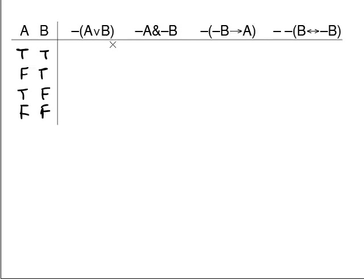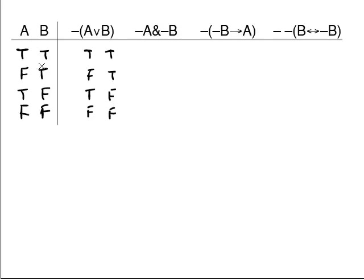Now let's work on dash-A wedge B. To be really thorough, start by repeating the guide column underneath the sentence letters. Under A, write true, false, true, false. Underneath B, write true, true, false, false. This is a step you may want to skip after you get more comfortable, but to begin with, just rewrite the guide columns underneath the sentence letters.